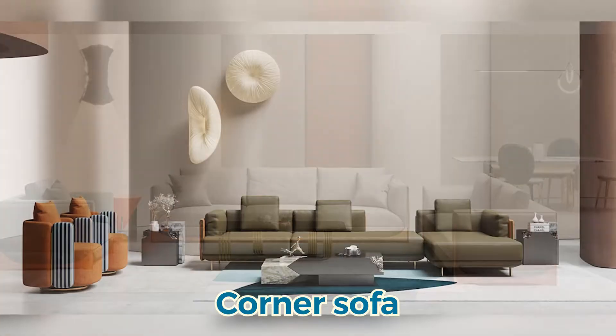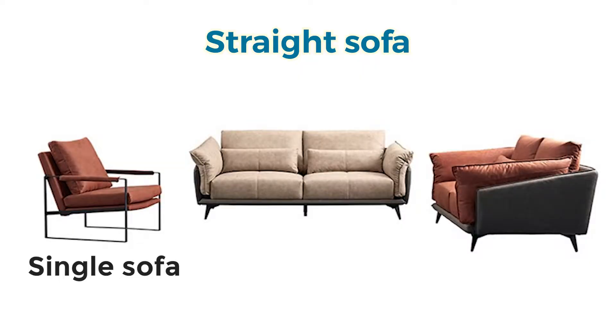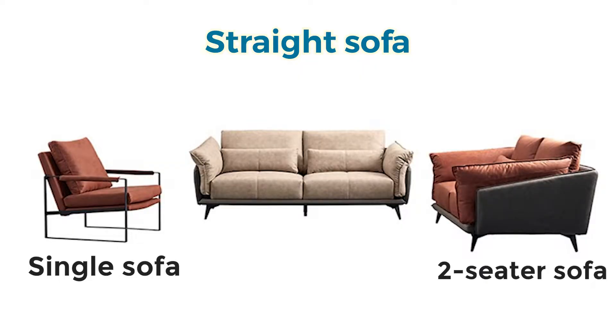In this video, I'll help you how to choose. The most common and popular combination for sofas are the straight sofas as well as the corner sofas. The corner sofas are also known as the L-shape. The straight sofas consist of one-seater, two-seater, and a three-seater.